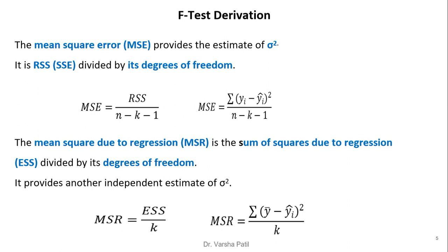For the F-test derivation: the mean square error (MSE) provides an estimate of sigma-squared and equals RSS divided by its degrees of freedom, so MSE = RSS / (N − K − 1). The mean square due to regression (MSR) is the sum of squares due to regression (ESS) divided by its degrees of freedom, so MSR = ESS / K, where K is the number of independent variables and N is the total number of records.